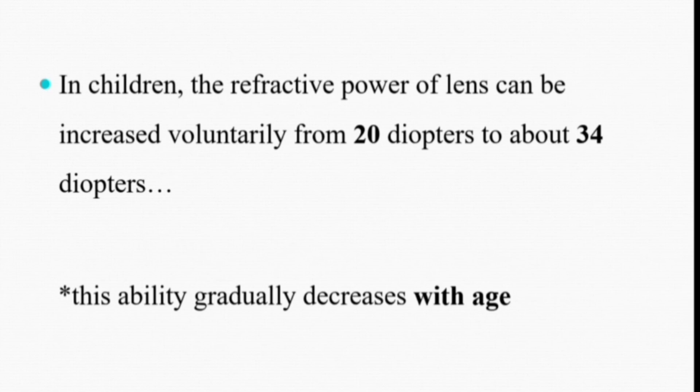This refractive ability to increase the refractive power of the lens is maximum in children. In children, this refractive power can be increased from the normal 20 diopters — we have discussed that the normal refractive power of the lens is 20 diopters — up to a maximum of about 34 diopters. With age, this ability of accommodation gradually decreases.